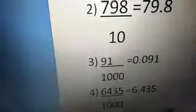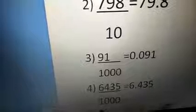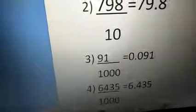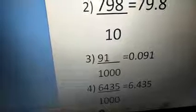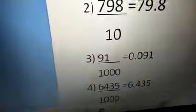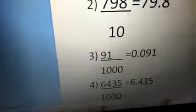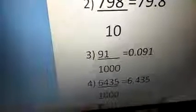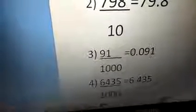Third problem: 91 divided by 1000. Listen carefully. Here we have 3 zeros. After the 3rd digit, I need to place the decimal. So I count: 1, 2 — instead of the third place, I need to put a 0. So I add 0 here. Next, I place the decimal. Before the decimal, I don't have any digit — so I put 0.